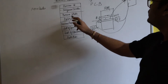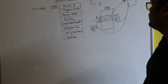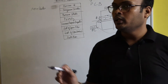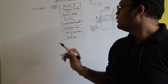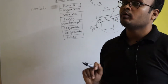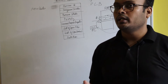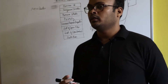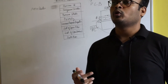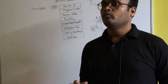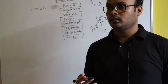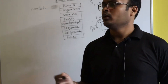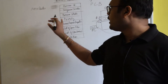The third attribute is process state. Process state means the current state of a process. There are several process states: new state, ready state, running state. When the process is running, you say the state of the process is running. When the process is in the hard disk, you say it is in new state. I will teach the process state diagram after this Process Control Block.